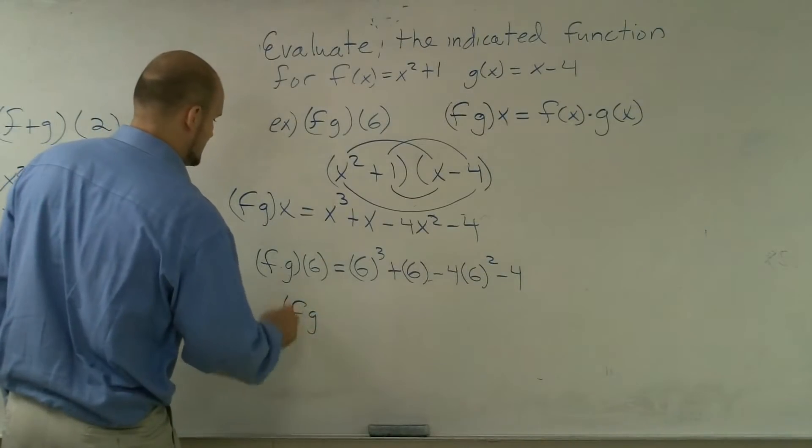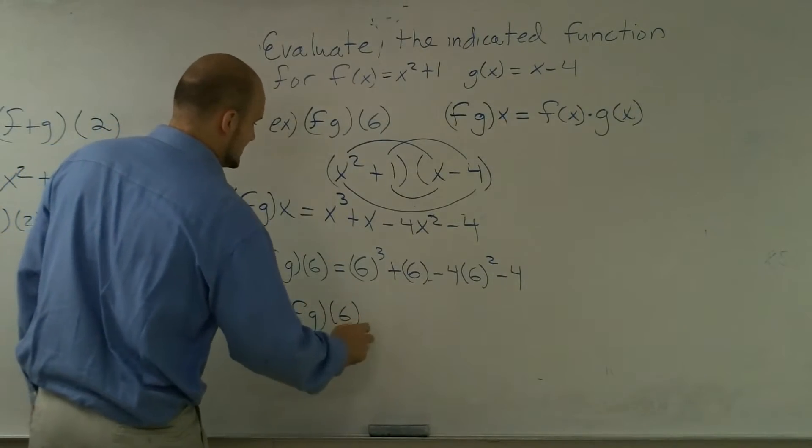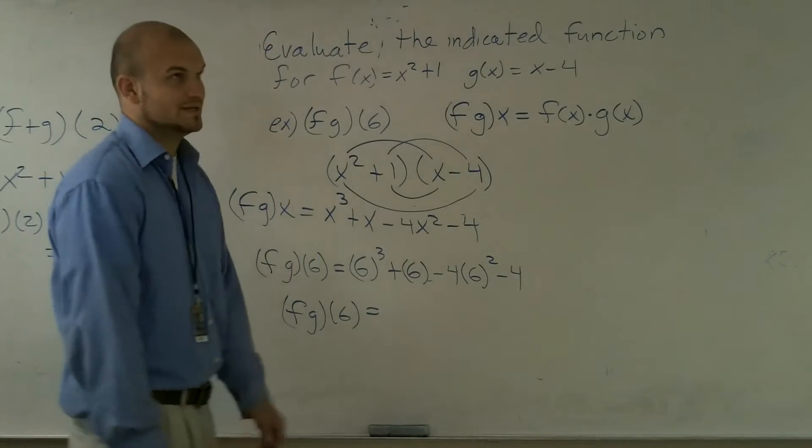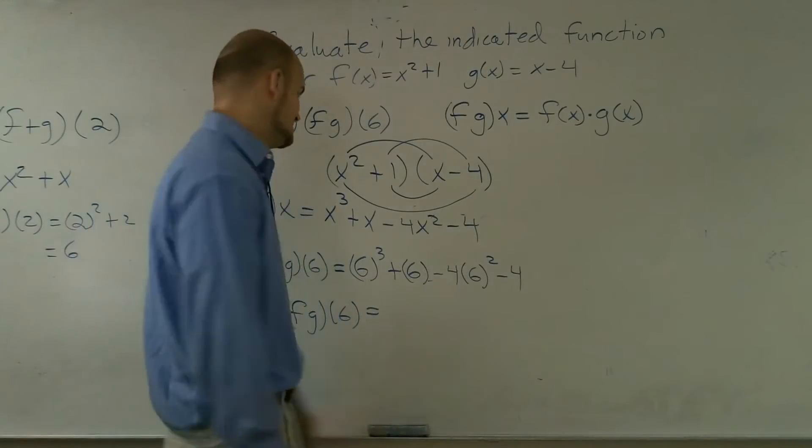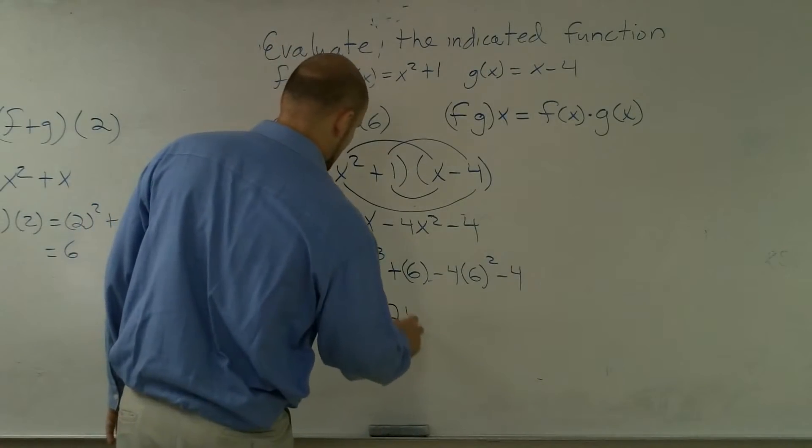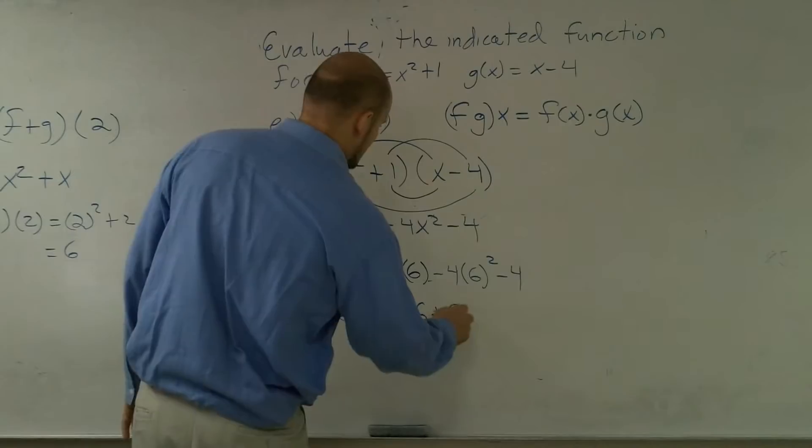So that's f of g of 6 equals 6 cubed, which is 6 times 36. Anybody, please help me out. 216, thank you very much.